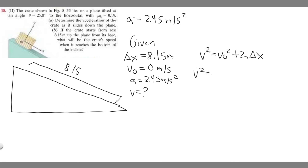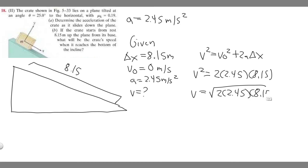Plugging in: v² = 0² + 2 times 2.45 times 8.15. Since v_0 = 0, that term drops out. So v = square root of (2 times 2.45 times 8.15). Calculating: square root of 2 × 2.45 × 8.15.